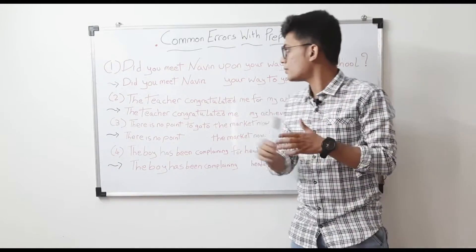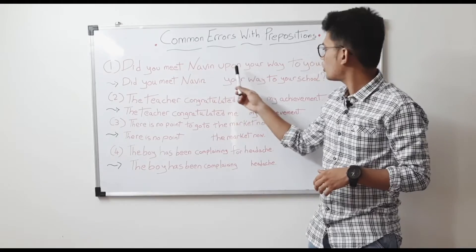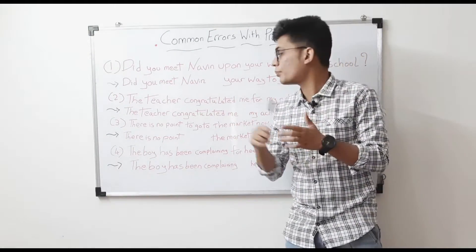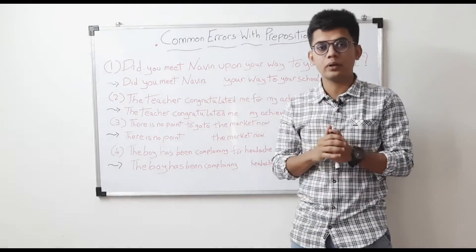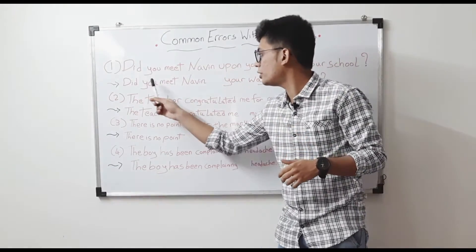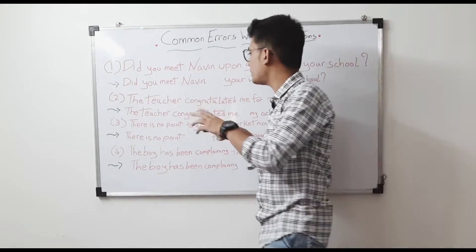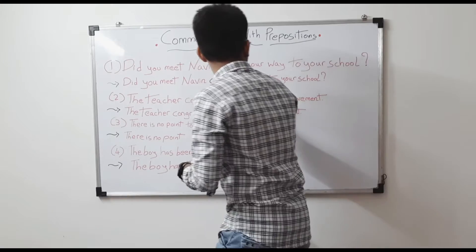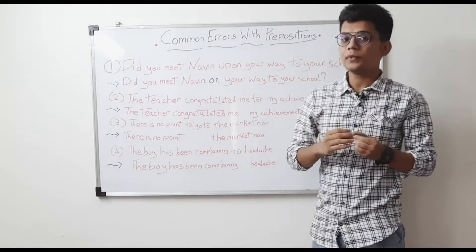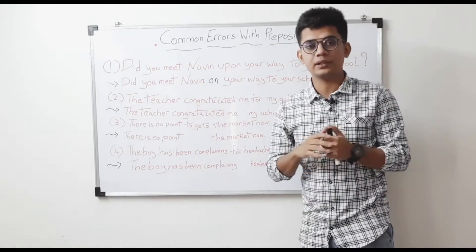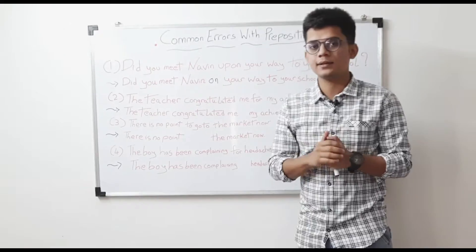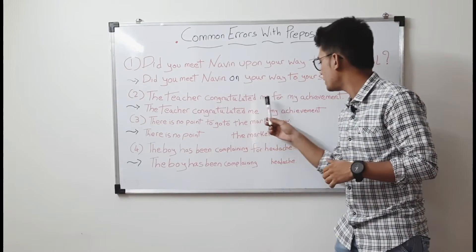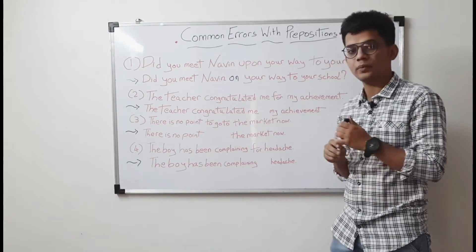Let's look at the first sentence: 'Did you meet Naveen upon your way to your school?' In this sentence, the preposition 'upon' is not accurate. The correct sentence will be: 'Did you meet Naveen on your way to your school?' — 'on' is the correct preposition here.